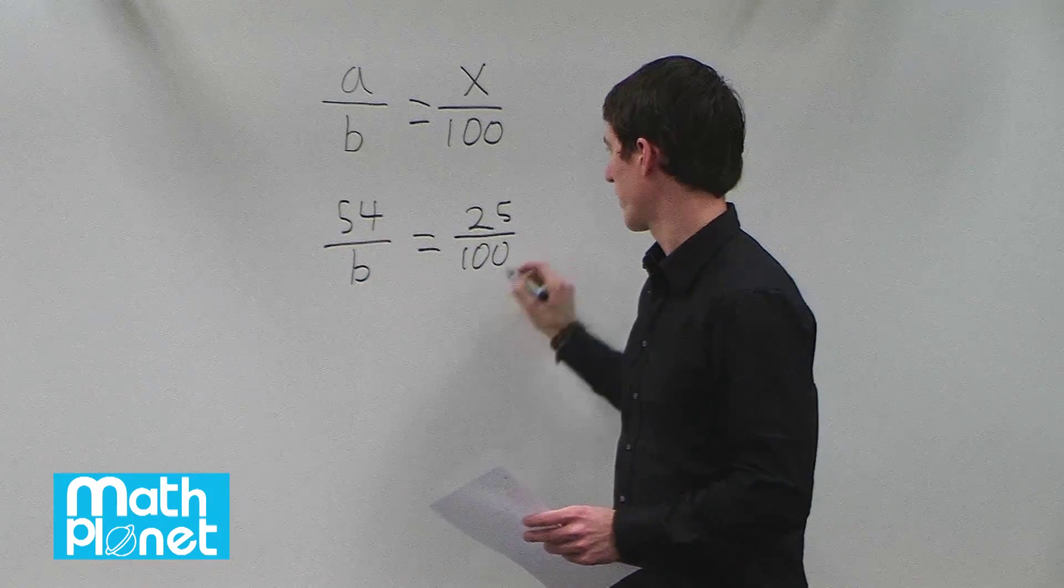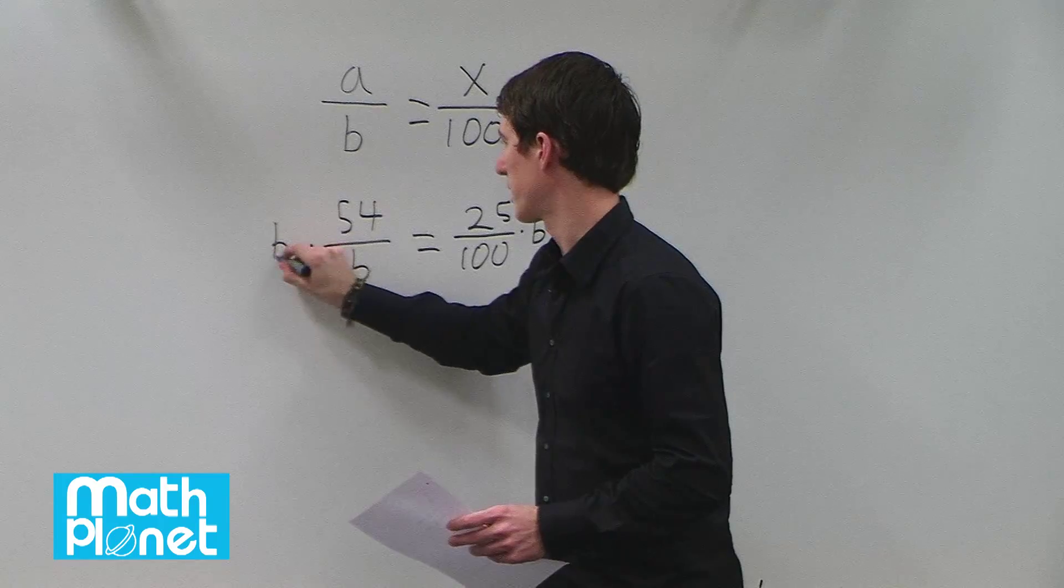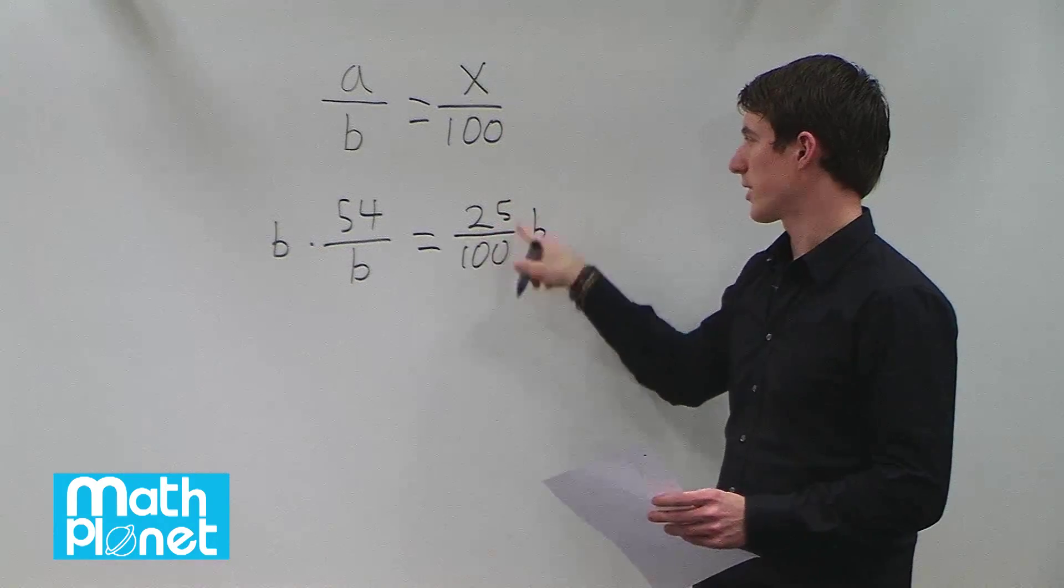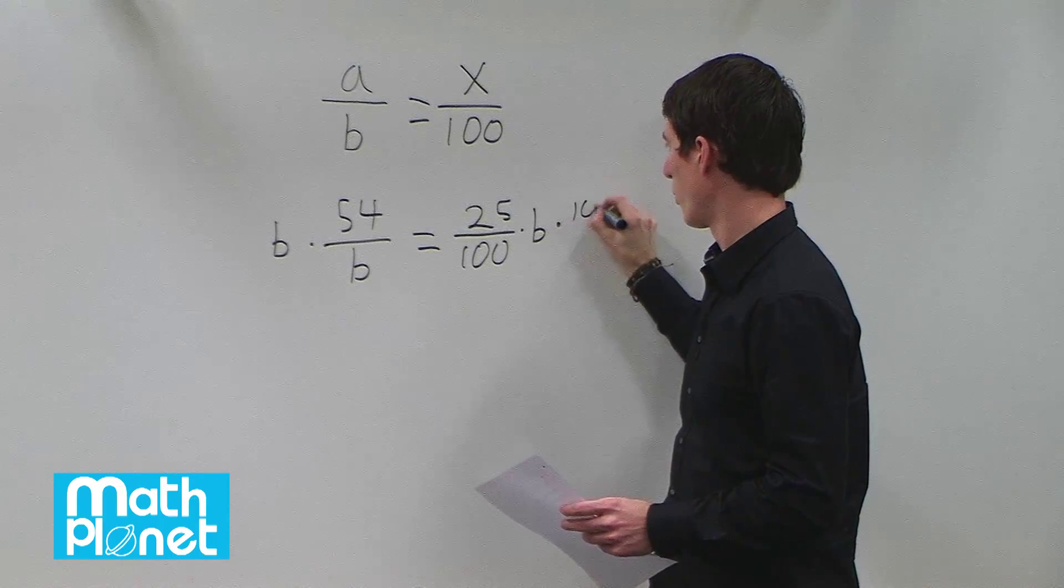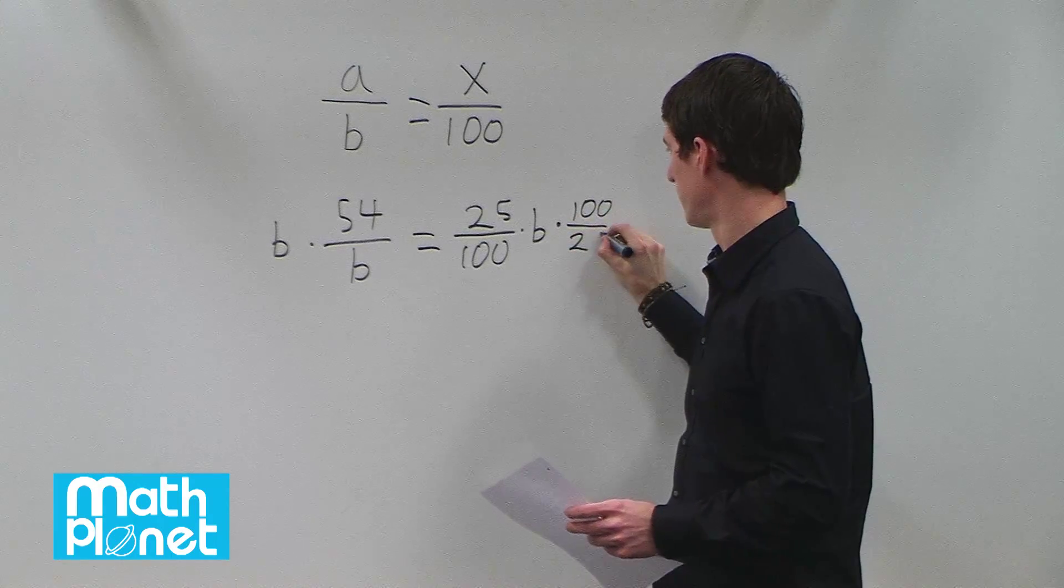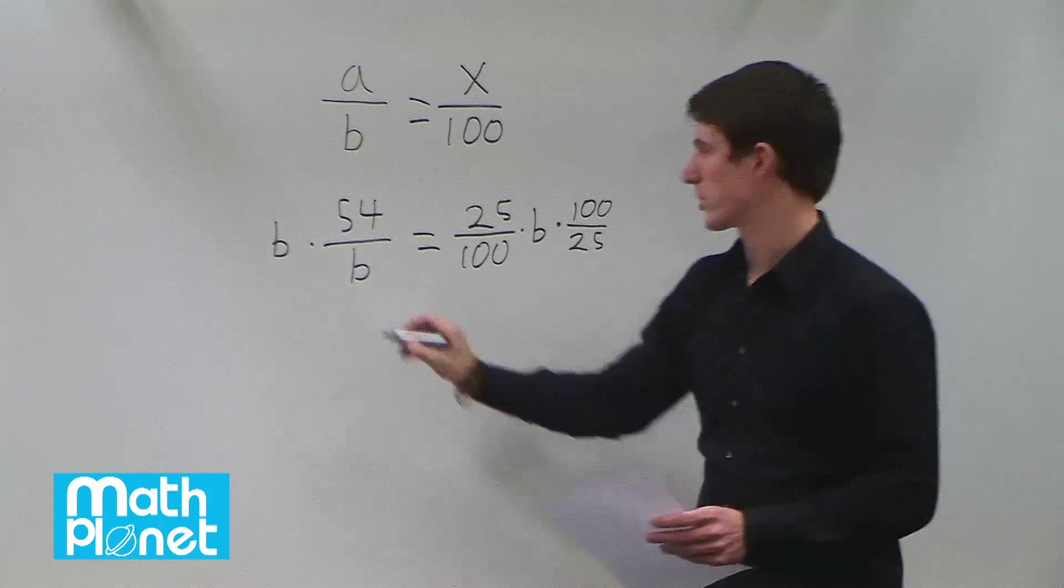So we multiply both sides by B to get it in the numerator, and then we need to get this over on this side, so we multiply both sides by 100 over 25, which is the inverse of 25 over 100.